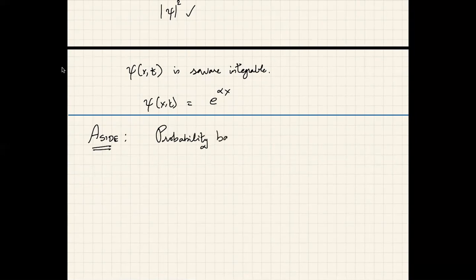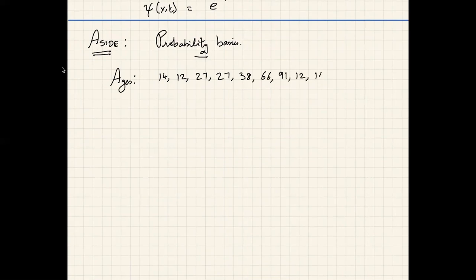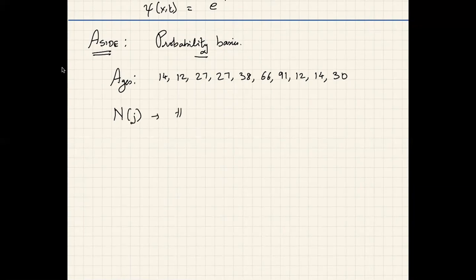I'll take the example of a discrete probability distribution. Consider a group of people in a room and look at their ages — say 14, 12, 12, 27, 27, 38, 66, 91, 12, 14, and 30. I'll denote by N(j) the number of people with age j. In our example there are two people with age 27, two with age 14, one with age 36, and so on.